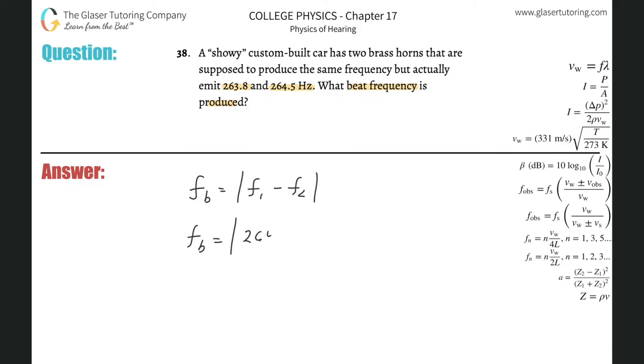So we have 264.5 minus 263.8, absolute value there, simply going to be 0.7 hertz. That's the beat frequency.